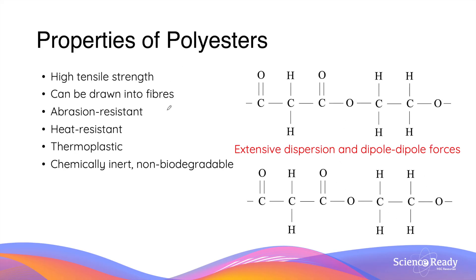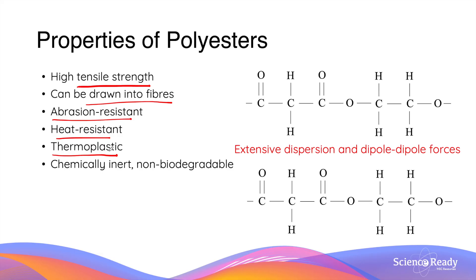There are numerous properties of polyesters. Polyesters have high tensile strength, meaning their structure remains unchanged under high tension forces. They can be drawn into fibers, which is useful for making clothing and textiles. They are abrasion resistant, heat resistant, and are also thermoplastics — plastics that can be melted and reshaped into different applications. Furthermore, they are chemically inert and non-biodegradable.